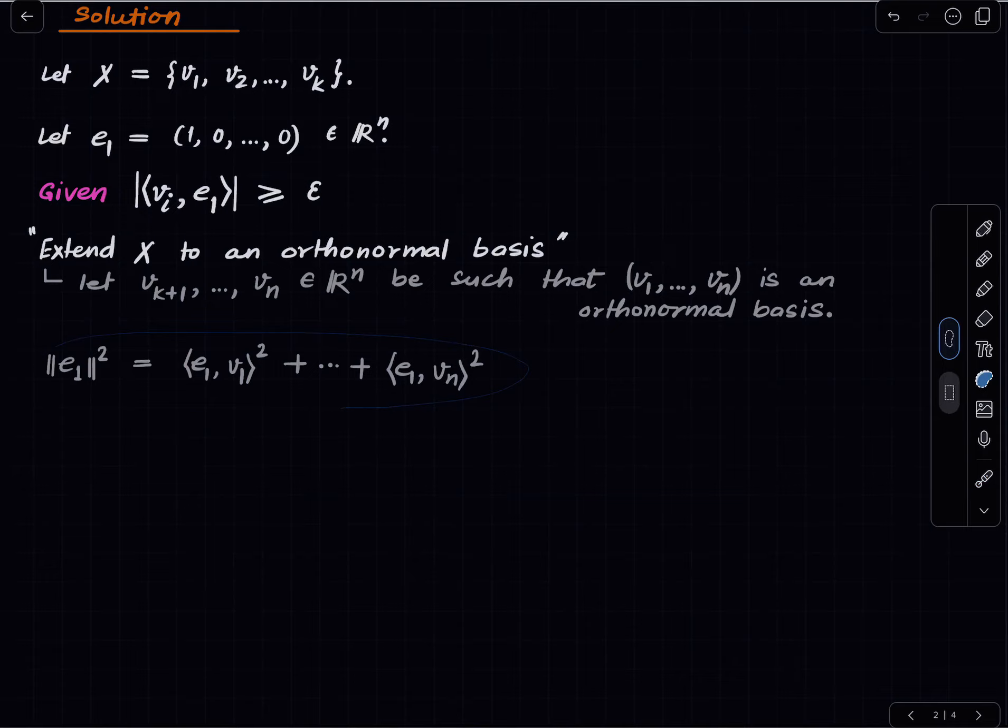Alright but norm e1 is clearly 1. This should be in different color. So norm e1 is equal to 1 and the right side is at least epsilon plus epsilon plus epsilon k times.